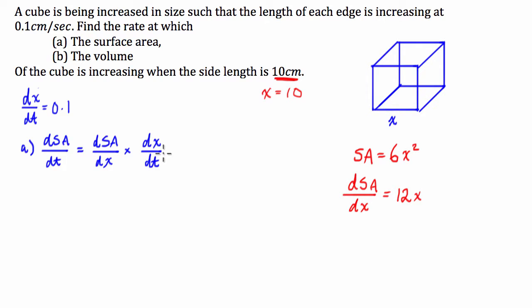So what we're going to do is we're going to write our function. So dSA/dt is going to be equal to dSA/dx which is 12x multiplied by dx/dt which we're told in the question is 0.1. So what we then do is we input our x value which we know is 10 and we have 10 times 12 is 120 times 0.1 is just 12 centimeters squared per second. So that's our answer for question a.